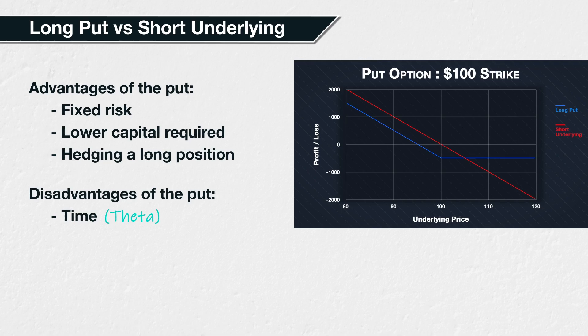To regain exposure to price decreases, they would need to buy another put option, whereas a trader who had shorted the shares instead could simply continue to hold the position. So when purchasing a put option, there is more pressure to be correct about the timing of the move, not just the direction.